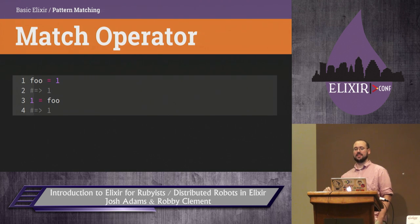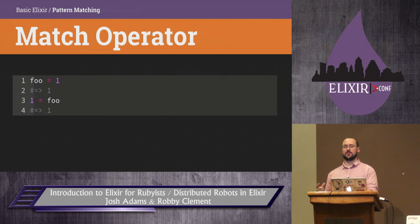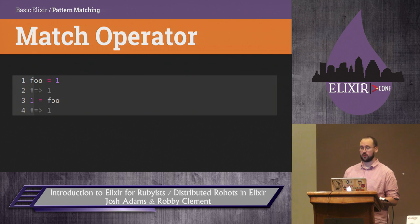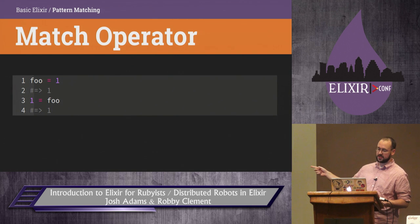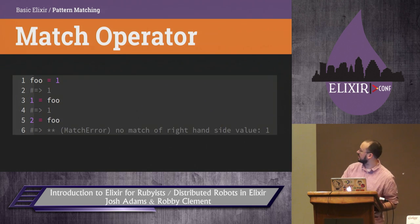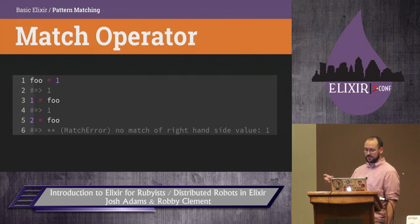It's not assignment — it's matching. You're basically making an assertion. If you assert something about an unbound variable, Elixir will bind the variable and the assertion will pass. So if foo already had the value one and you try to match it to two, the match fails and a match error is thrown. You're going to run into match error a lot. You want it to catch when you expected a good HTTP request and you didn't get one.